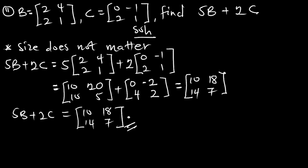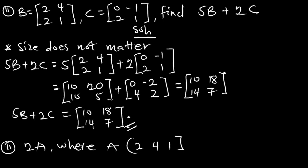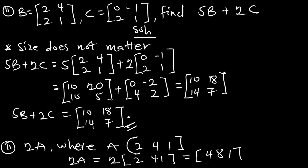So, what we are saying is the size does not matter for multiplying a matrix with a scalar. Assuming we have example 3: if I multiply 2 by matrix A, where A is a row matrix [2, 4, 1], since the size does not matter, our solution is going to be 2A, which is 2 multiplied by [2, 4, 1], giving us [4, 8, 2].